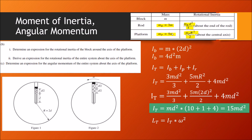Part C asks for the angular momentum of the entire system. Angular momentum equals moment of inertia times angular velocity, so substituting our total moment of inertia of 15md² gives angular momentum equal to 15md² times omega.